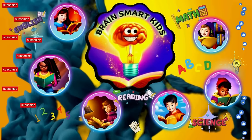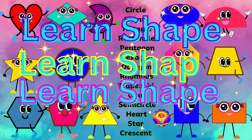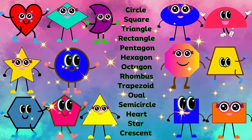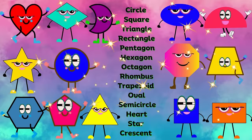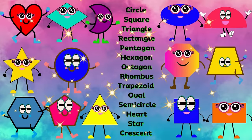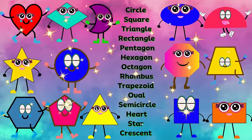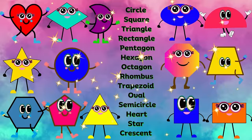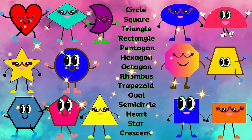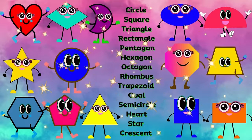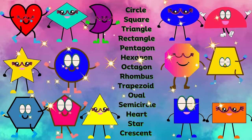Brain Smart Kids! Learn shapes: circle, square, triangle, rectangle, pentagon, hexagon, octagon, rhombus, trapezoid, oval, semicircle, heart, star, crescent.